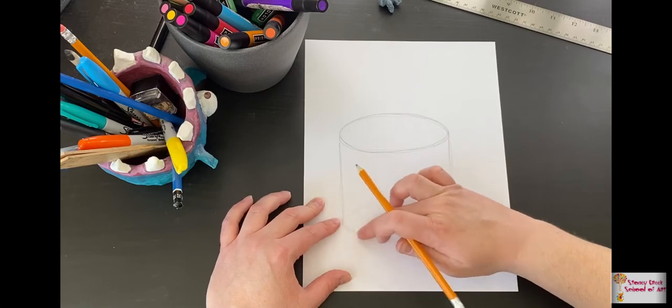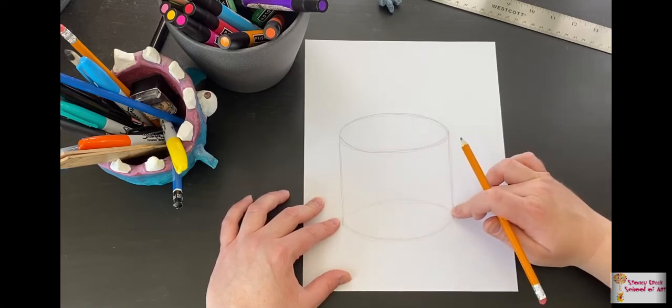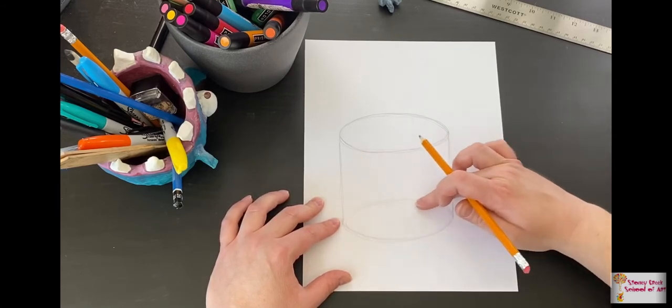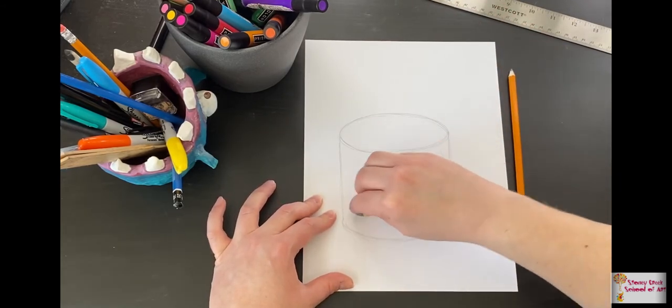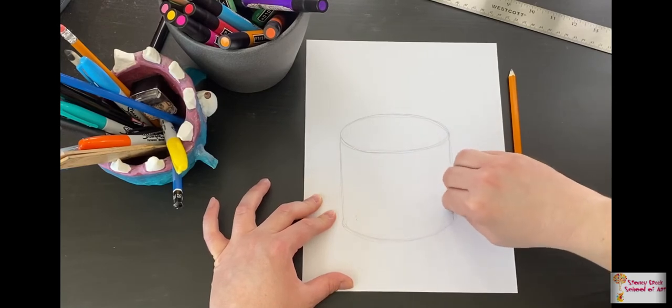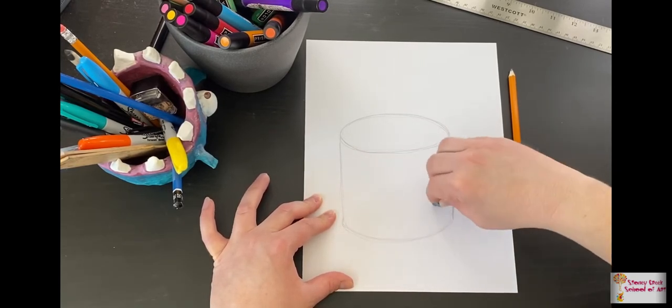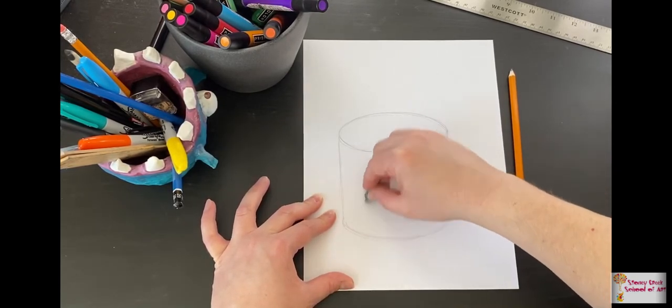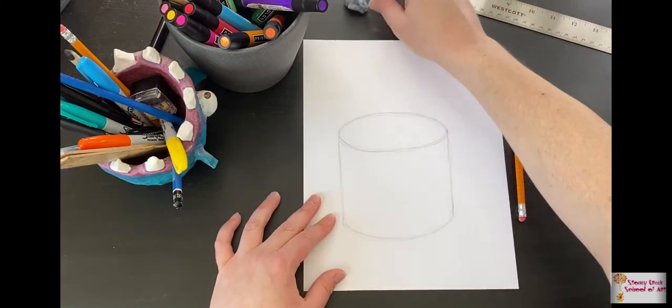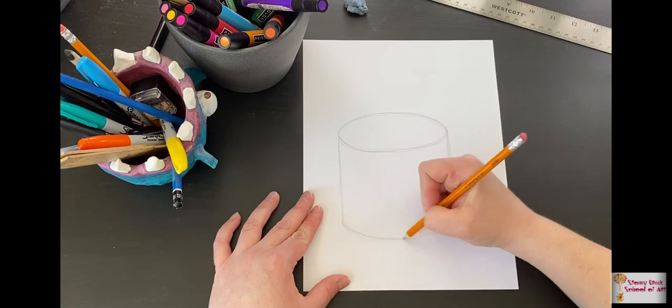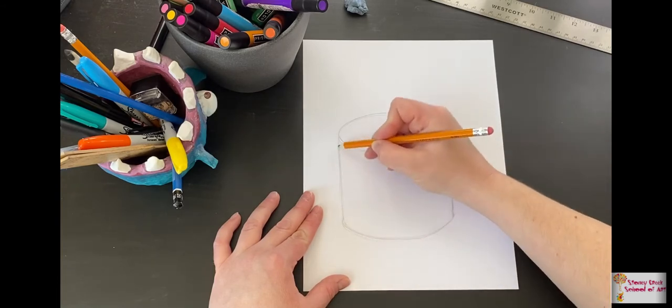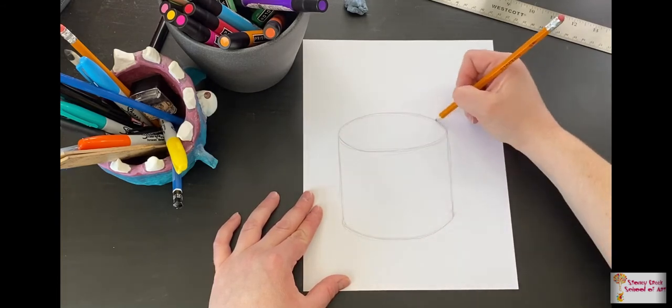So with your eraser now that you have that oval shape, we want to erase this top part because this is the part that you can't see through the cup. Unless your cup was see-through if it was just like a glass clear mug you would see that. Okay so perfect. So we have that curve on the bottom, our straight sides, the curve for the opening.